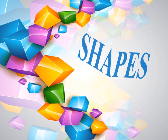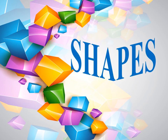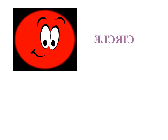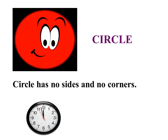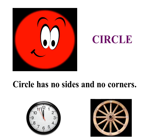Dear, today we will learn one more topic: shapes. What is this? What shape is this? It is a circle. A circle has no sides and no corners. Can anyone give me two examples for a circle? I will say two examples: a wall clock and a wheel — they are both circle in shape.